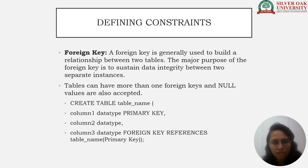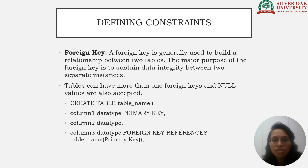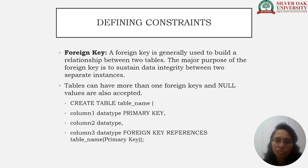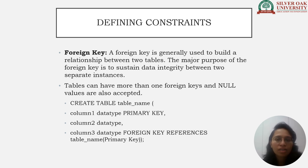A Foreign Key is generally used to build a relationship between two tables. Its major purpose is to sustain data integrity between two separate instances. Tables can have more than one foreign key, and null values are accepted. Syntax: CREATE TABLE table_name (column1 datatype PRIMARY KEY, column2 datatype, column3 datatype, FOREIGN KEY REFERENCES table_name(primary_key)). It is important to define the primary key and foreign key while creating the table.